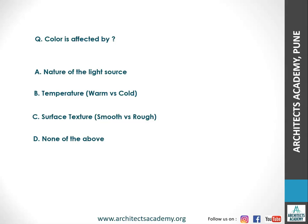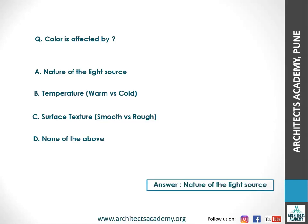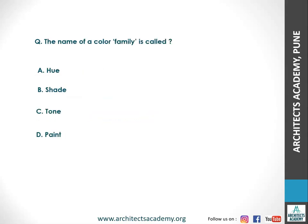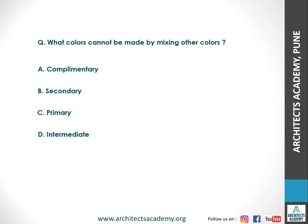The next question: color is affected by — and the right answer is the nature of the light source. Next, the name of a color family is called a hue. The original colors are generally called the hues of the colors. Next, what colors cannot be made by mixing other colors? The right answer is primary colors. Primary colors are the original colors which are mixed together to form secondary and intermediate colors.